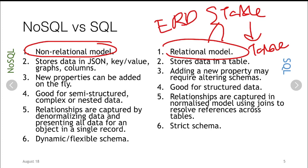Next, NoSQL stores data in JSON, key-value, graph, and column formats — we will see this in the next slide. SQL, on the other hand, stores data in tables, which have rows and columns.